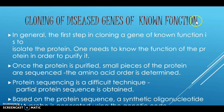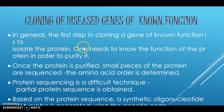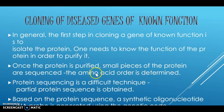Let us know about the cloning of the diseased gene of known function. In general, the first step is to isolate the protein. After isolating the protein, an assay for the protein is required, such as an enzyme activity assay where the product can be measured. One needs to know the function of the protein in order to purify it. After isolating the protein, an assay is carried out to determine how much product is obtained. Once the protein is purified, small pieces of the protein are sequenced and the amino acid order is determined.